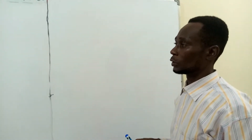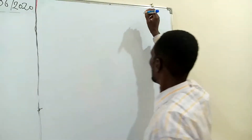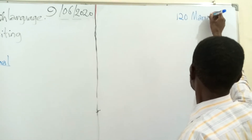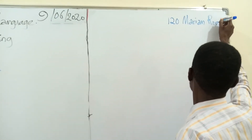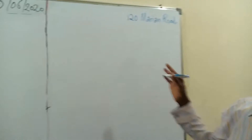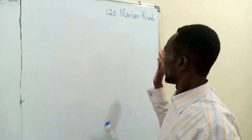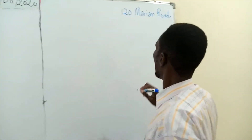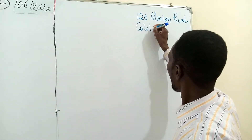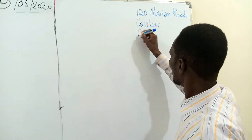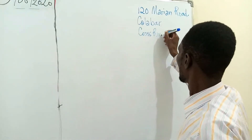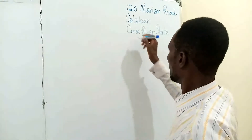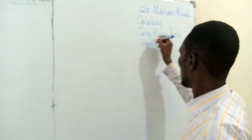Let's assume we are writing from home. We are living at Marian. We say 120 Marian Road, Calabar. This is the right hand corner of the paper. This is an imaginary letter. So we are assuming that we are living there and writing from there: 120 Marian Road, Calabar, Cross River State. If the letter is going overseas, we will put Nigeria there.